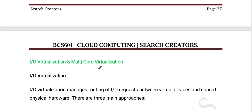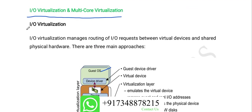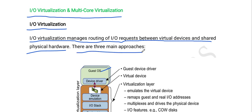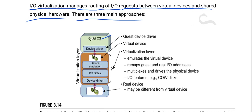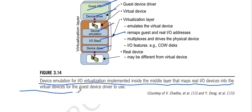Next is input-output virtualization. I/O virtualization manages routing of I/O requests between virtual devices and shared physical hardware. There are three main approaches. In this figure, we can observe the guest OS, device driver, device emulation, I/O stack layers. This is the virtualization layer, showing device emulation for I/O virtualization implemented inside the middle layer that maps the real I/O device into a virtual device for the guest device driver to use.